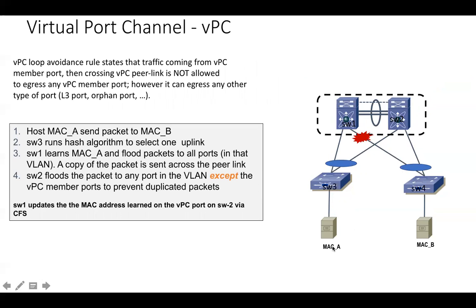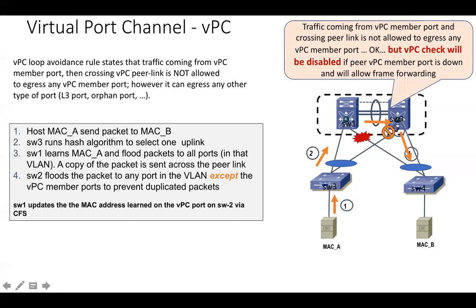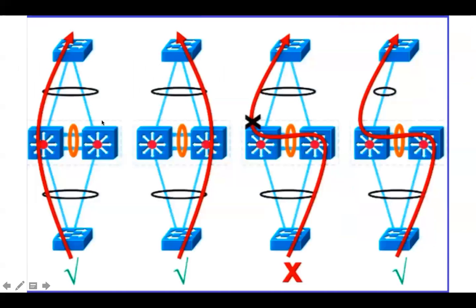There is a VPC exception as well. Again, traffic originates from System A, Switch 3 performs local hash and chooses Switch 1. Switch 1 sends traffic towards Switch 2. The VPC check applies — if receiving traffic on the peer link, it cannot be sent out of any VPC member port. However, the VPC check will be disabled if the remote VPC member port is down. In that case, the packet is forwarded out of the member port. This is the only case when VPC check will be disabled.